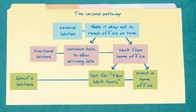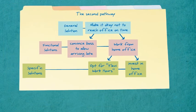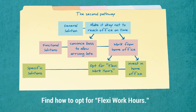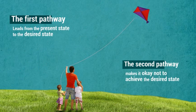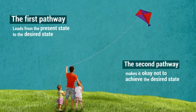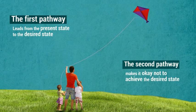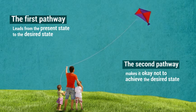Following the Dunker diagram technique, Mark's revised problem statement is: find out how to opt for flexi work hours. Remember that the Dunker diagram not only helps you reach the desired state, but also helps you modify the current state in such a way that it is alright not to achieve the desired state.